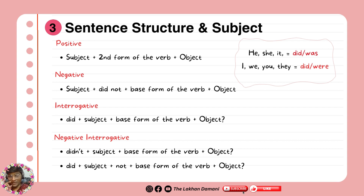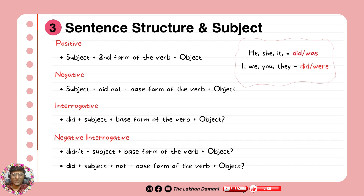In the third point we have sentence structure and subject. For positive sentences, always use subject plus second form of the verb. For example, I did my homework — you don't need to use a double verb. Another example: I went to school. You don't say I did went to school — that's wrong. You have to use only one past form, not two together.